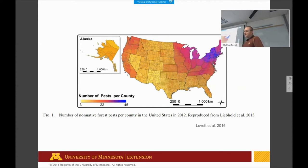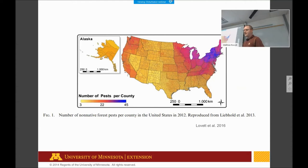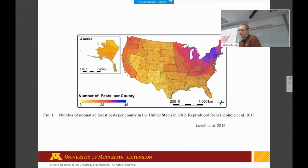We're always concerned about native forest pests, but the number of non-native forest pests in Minnesota is quite high — about 20 forest pests are a significant concern for forest management. Being near a major shipping port like Duluth increases this risk. When new pests arrive, we need to find ways to manage them and mitigate their impacts on our forests.